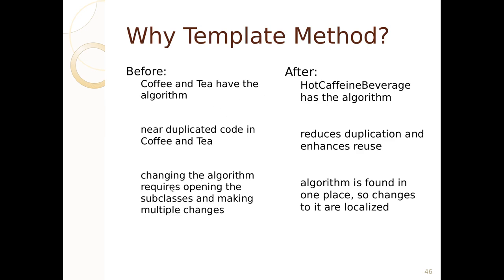Changing the algorithm in the original case required opening the subclasses and making multiple changes. This algorithm is found in one place, so changes to it are localized. If the algorithm changes, we change it in one spot. If there's a bug in the algorithm, we only change it in one spot.